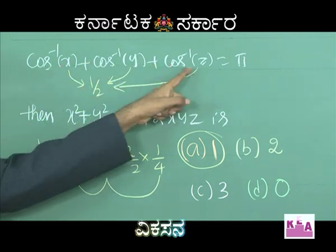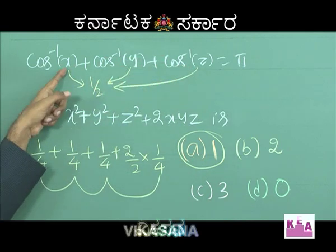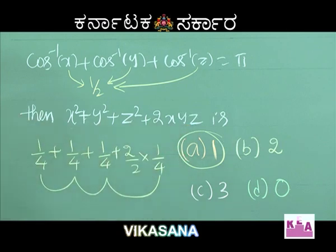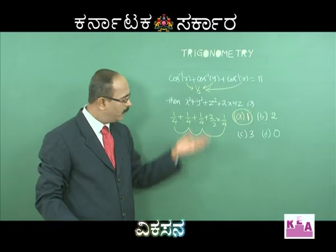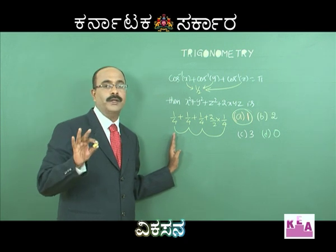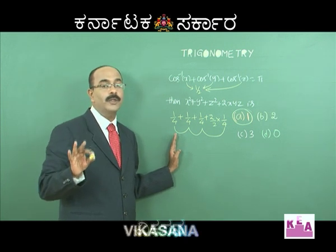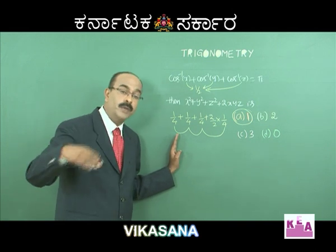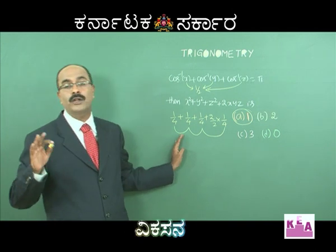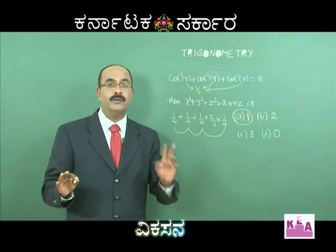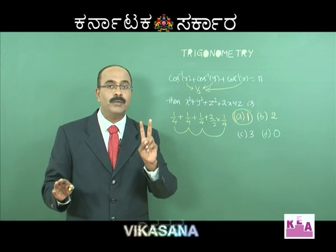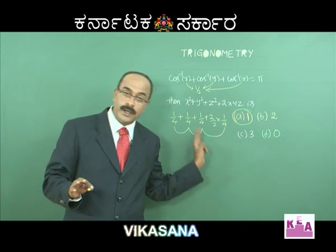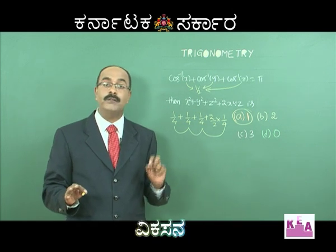Alternatively, put x equals minus 1, y equals 0, z equals 0. Cos inverse of minus 1 is pi. Putting x equals minus 1, you will also get the answer as 1. You can use this method, but you can also use a shortcut. You can use the shortcut very efficiently, considering different approaches used in previous circumstances.